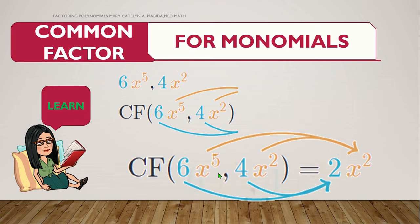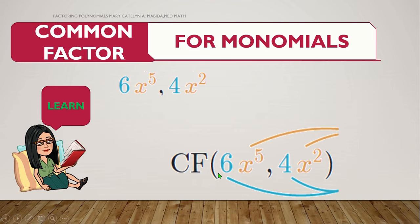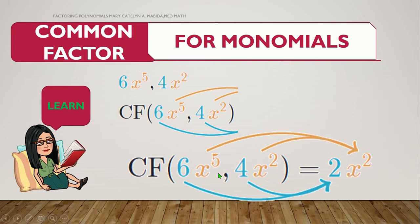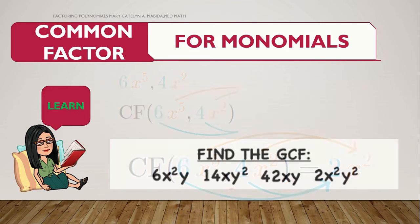Okay. One more time. Factor out 6 and 4. That's 2. x to the 5th and x squared. That's x squared. Multiplying 2 and x squared, we get 2x squared, which is the greatest common monomial factor of the two monomials. Now, let's try another one.